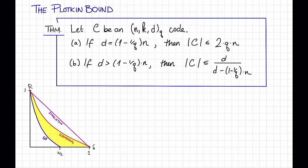Further, if the distance is bigger than that, up here somewhere, then the size of the code is smaller still, smaller than d divided by d minus 1 minus 1 over q times N.